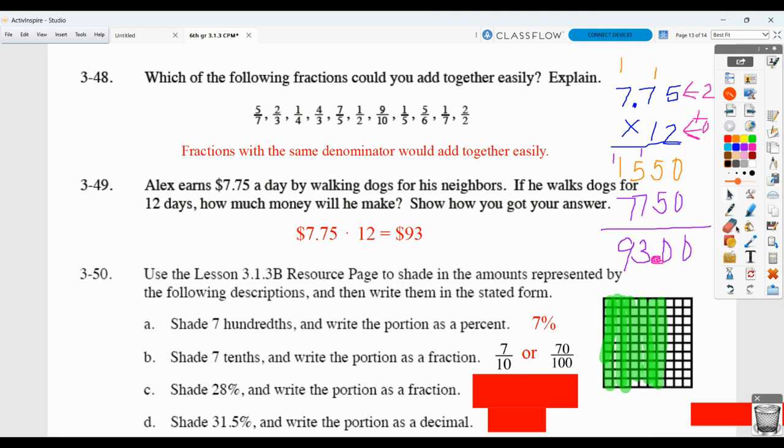Here, they want us to shade 28 percent. So again, you're going to shade in basically two columns of ten plus another eight squares, and they want that written as a fraction. Well, that would be 28 out of 100. Again, we typically want you to try to simplify if you can. What will both 28 and 100 divide by other than one? Well, they would both divide by four. So 28 divided by four is seven. 100 divided by four is 25. This is considered the simplified form.